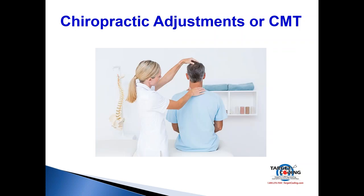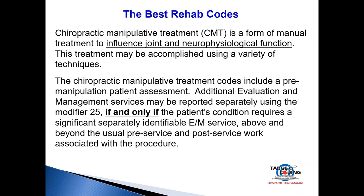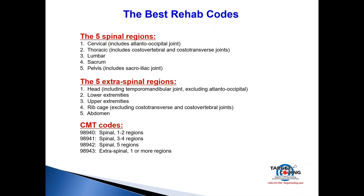Before we get into rehab, let's talk briefly about adjustments. Chiropractic manipulative treatment, or CMT, according to the AMA includes a mini evaluation before the adjustment and a post-adjustment mini evaluation. For example, walking in and doing a posture check, leg length check, or checking forward head posture, then after the adjustment retesting some muscles. You can't bill extra for that. There are five spinal regions and five extremities, with chiropractic codes 98940, 98941, 98942, and 98943.